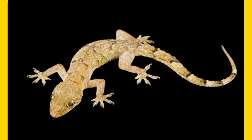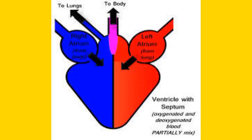Reptiles have four limbs with five toes, so they are pentadactyl. Reptiles have a three-chambered heart. They have two atria and one ventricle.